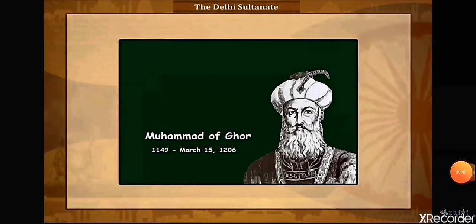The next prominent Turkish ruler was Muhammad Gori. After the death of Prithviraj Chauhan, Muhammad Gori became the master of the Delhi region and eastern Rajasthan, and laid the foundation of Turkish rule in India. He did not stay in India, but left the provinces he had conquered in the hands of his slaves, who acted as his regional governors. They set up the Delhi Sultanate, which we will study in this video.